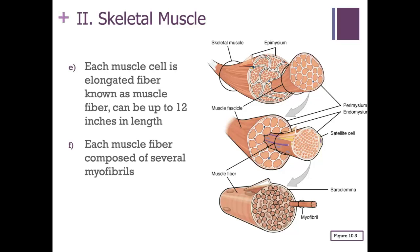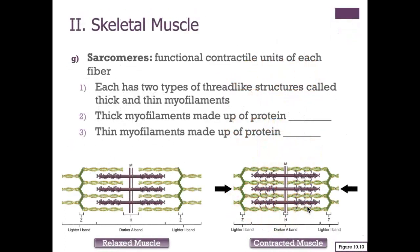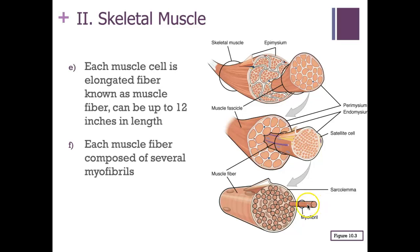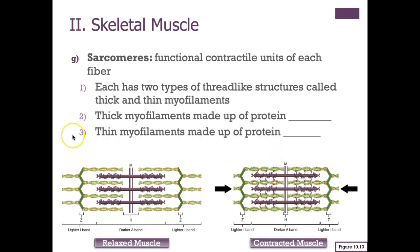Each muscle cell is an elongated fiber — skeletal muscle cells can be up to 12 inches in length or even longer. Each muscle fiber contains myofibrils. Along each myofibril are structures called sarcomeres, which are the structural and functional units of the muscle fiber. Sarcomeres are repeated throughout the myofibril, back to back, and each contains two types of thread-like structures called thick and thin myofilaments.